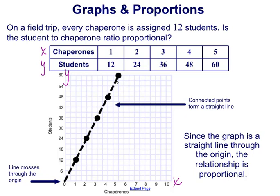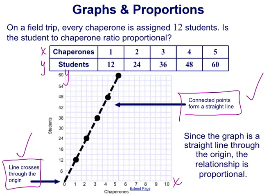So now you can see that if we connected the points, they form a straight line. That's the first thing we have to test in order to see if it's proportional. We then see if the line crosses through the origin. Since the graph is a straight line through the origin, the relationship is proportional.